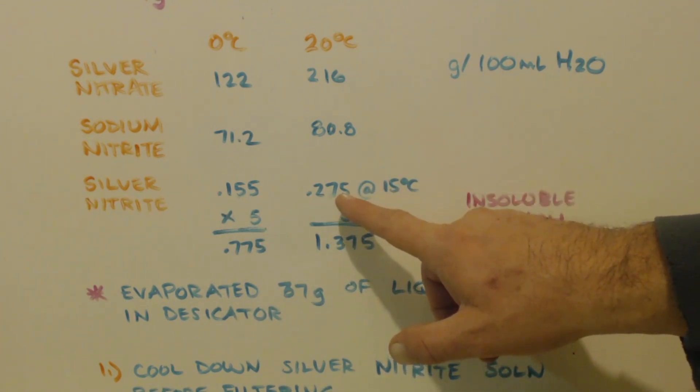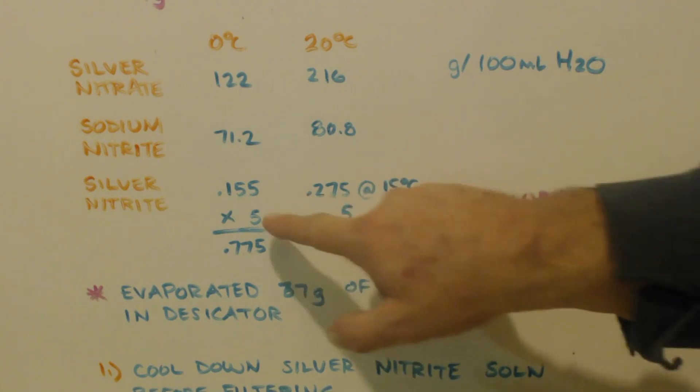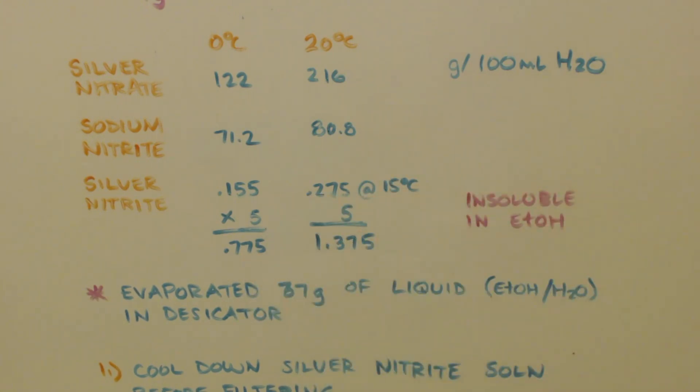I should have cooled it down before I filtered it to make sure that all the silver nitrite would precipitate out. I used about 200 milliliters of water on the silver nitrite and 200 milliliters on the sodium nitrite to get them dissolved. That's 400 milliliters right there, and another 100 milliliters to wash it. So that's 500 milliliters. So I times both of these by five to see how much loss I would get, because that's how much is going to be dissolved in the water. If I would have chilled it, it would have only been 0.775 grams that dissolved that I lost. But I did mine at room temperature, so I lost 1.375 grams. Total, though, my yield, I lost 7 grams. I don't know how I lost so much.